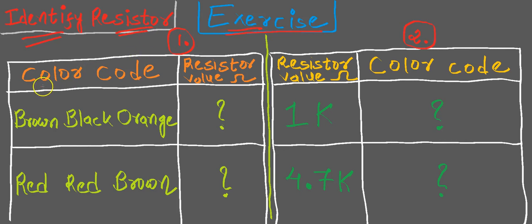In part 1, you are given the color code and you need to identify the value of the resistor.